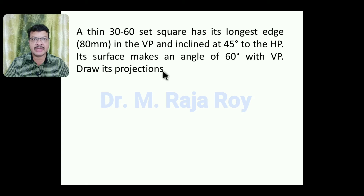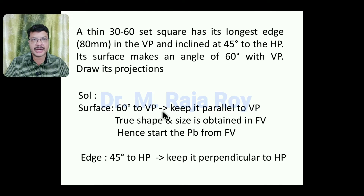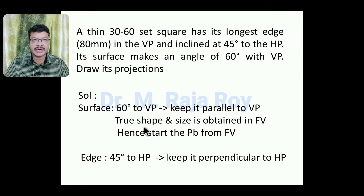When a problem is given like this, the first step is we have to extract the surface inclination. The surface is 60 degrees to VP. According to our standard procedure, when the surface is inclined to VP, we have to keep the surface parallel to VP. When the surface is parallel to VP, we will get true shape and size in the front view. Hence, we have to start the problem from the front view.